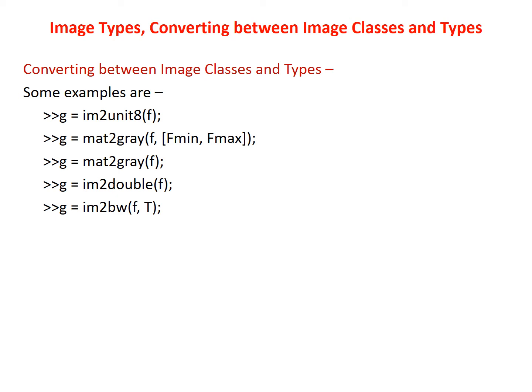Converting an arbitrary array of class double to an array scaled to the range 0 to 1 can be accomplished using the mat2gray function: g = mat2gray(f, [fmin fmax]). Image g has values in the range 0 (black) to 1 (white). Values less than fmin in f become 0 in g, and values greater than fmax in f become 1 in g. Using g = mat2gray(f) sets fmin and fmax to the actual minimum and maximum values in f. Both input and output are of class double.